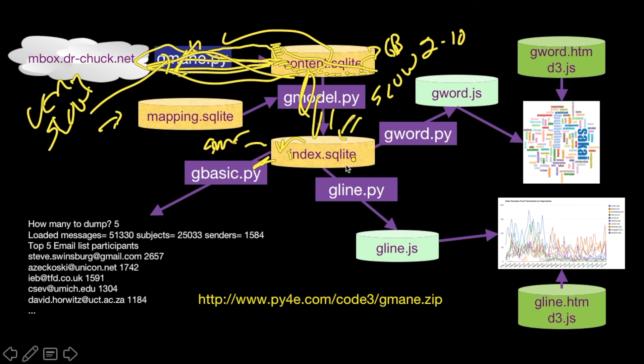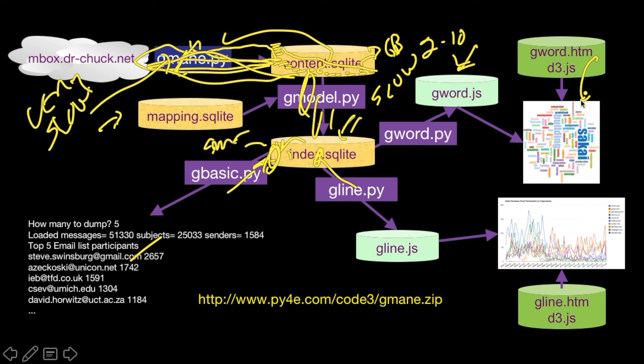We do our visualizations and analysis from this clean version of all the data. gbasic loops through and prints some stuff out — it's a great way to test things and a pretty easy to understand program. gline does some bucketing and makes histograms to produce a line graph. gword does a histogram of word frequency and produces that as gword.js. Then we have two HTML files that use d3.js visualization to produce a line chart and a word cloud chart. In another video I'll show how this code works. If you really understand everything in here, you can build a pretty sophisticated data retrieval and analysis pipeline.